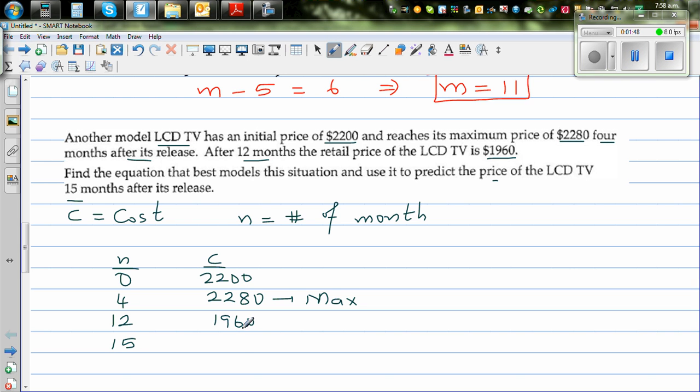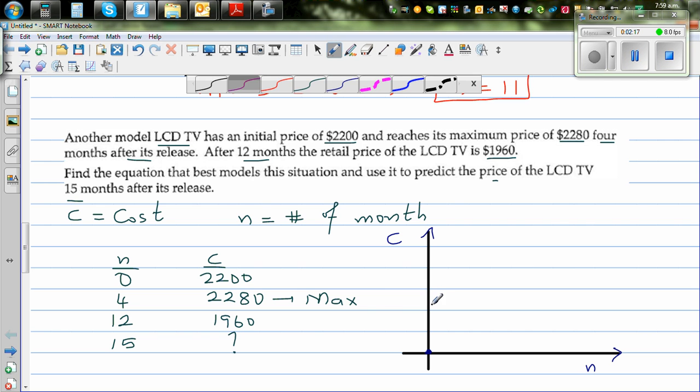So let us draw a sketch of this graph. This is your y-axis and this is your x-axis. I'm taking C on the y-axis and on the x-axis I'm taking N for the number of months. So when it goes 0, it is 2,200 here. This is 2,200. After 4 months, this is 4 months here.